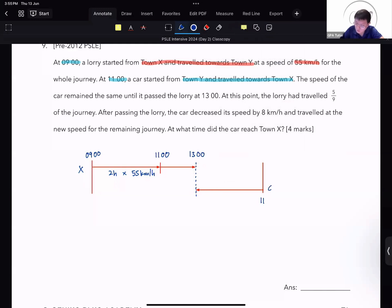Because the car started later, the car has only traveled for two hours so far. You can tell from this time that this is two hours. And this part here is also two hours. Always remember that at the point of the vehicle's meeting, when they are in opposite direction, traveling towards each other, the total distance traveled at the point of meeting, as you can tell from the diagram, is the distance from X to Y. Now, at this point, they tell you that the lorry had traveled 5 out of 9 of the journey.